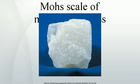As the hardest known naturally occurring substance when the scale was designed, diamonds are at the top of the scale. The hardness of a material is measured against the scale by finding the hardest material that the given material can scratch, and or the softest material that can scratch the given material. For example, if some material is scratched by apatite but not by fluorite, its hardness on the Mohs scale would fall between 4 and 5.